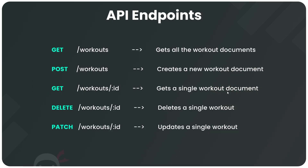In this lesson we're going to focus on setting up the different routes or API endpoints for our Express API. What we want to eventually do is interact with the database using this API to do things like get workouts from the database and send them back to the clients, or add new workouts, or delete them, or update them. We're going to set up various endpoints to do this, and I just wanted to run through these first in a slide.